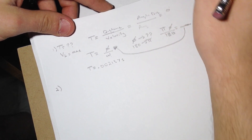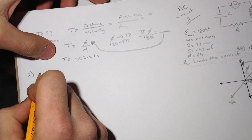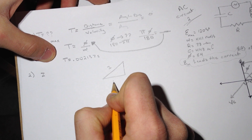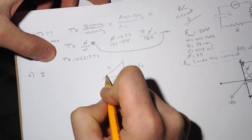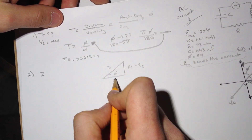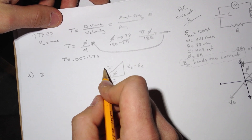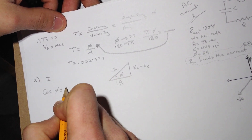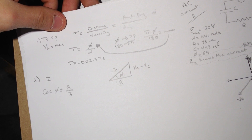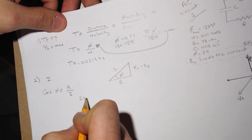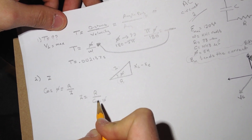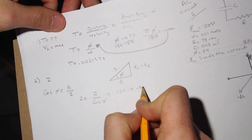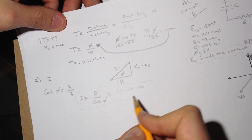Question two asks for Z, the impedance of the circuit. I always draw the impedance triangle: Z is the hypotenuse, R is the adjacent side, and (X_L minus X_C) is the opposite side, with phi as the angle. Using cosine: cos(phi) = R / Z, so Z = R / cos(phi). I got Z equal to approximately 124.19 ohms.